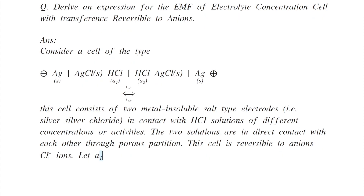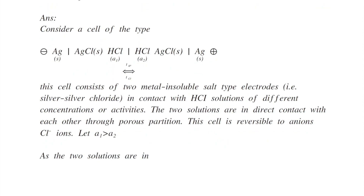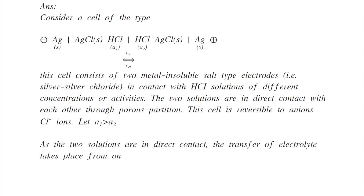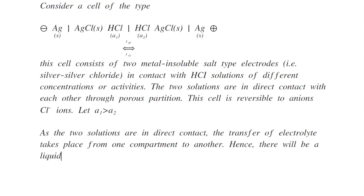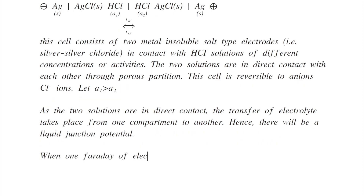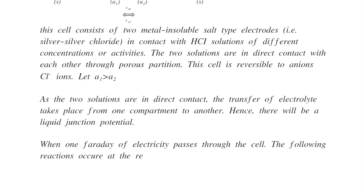Let A1 be greater than A2. As the two solutions are in direct contact, transfer of electrolyte takes place from one compartment to another. Hence, there will be liquid junction potential formation. When one faraday of electricity passes through the cell, the following reactions occur at the respective electrodes.